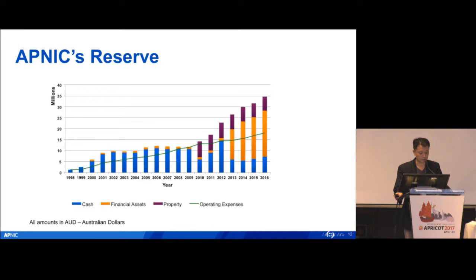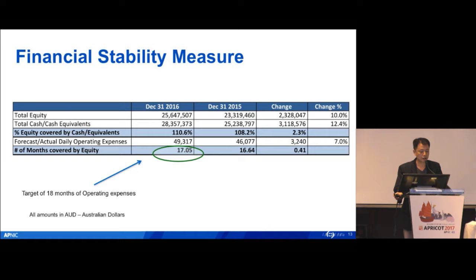That's the APNIC reserve. Blue colour stands for cash, yellow for different kinds of financial assets, and purple for property. Our financial stability measure — the number of months covered by our equity — is 17 months. The initial EC target was 18 months of operating expenditure, so we are pretty much close to what we target. 17 months is a very healthy, strong financial position.